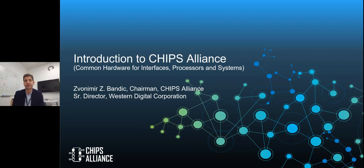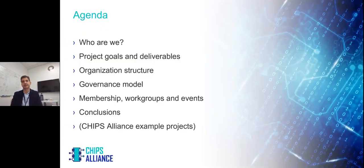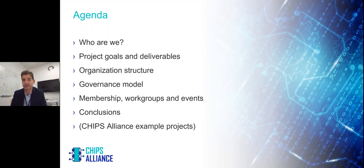The presentation today is an introduction to CHIPS Alliance. CHIPS is an abbreviation for Common Hardware for Interfaces, Processors, and Systems. The agenda covers who we are, project goals and deliverables, organization structure, governance model, membership, work groups, and events. In the backup for this presentation, which I'm happy to share with attendees, I've also included some CHIPS Alliance example projects that can be interesting to people who want to learn more or study examples of what this organization is doing.